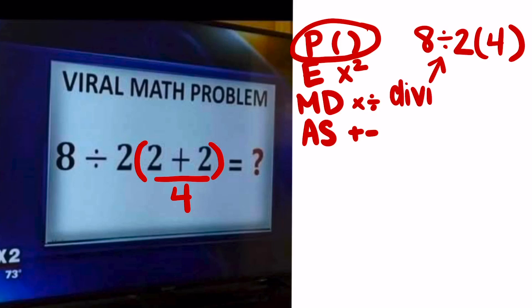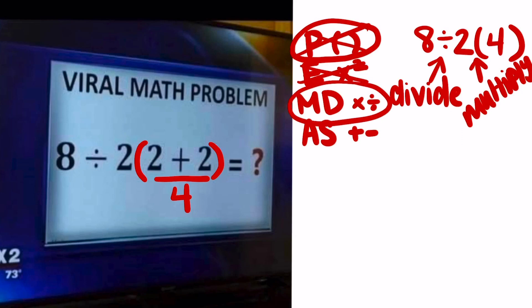That was the first mistake I saw so moving on. We know it should be divide and multiply now which brings me to my second mistake I saw people making. We're done with parentheses, we're done with exponents, now we are on multiply and divide. Mistake number two is thinking that we have to multiply before we divide.